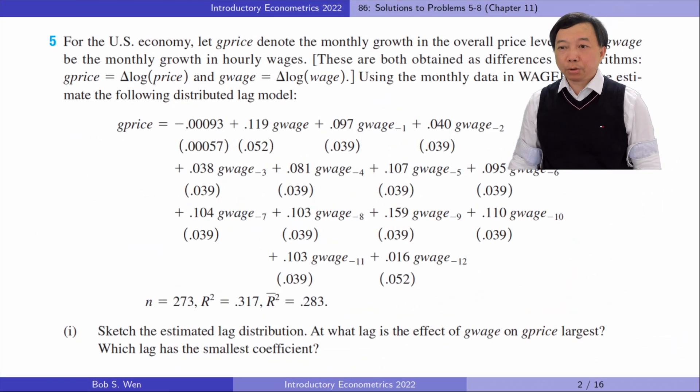Let's find answers to problem 5. For the US economy, let g_price denote the monthly growth in the overall price level and let g_wage be the monthly growth in hourly wages. Using the monthly data, we estimate the following distributed lag model.